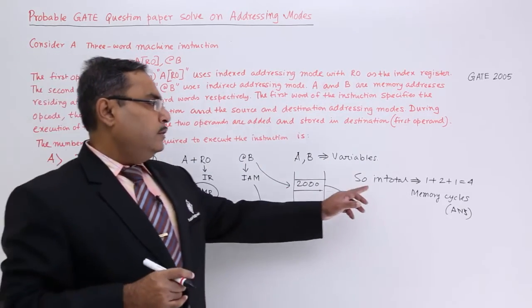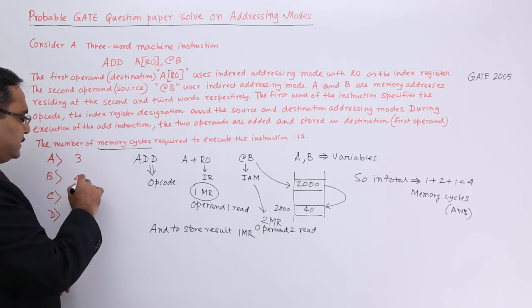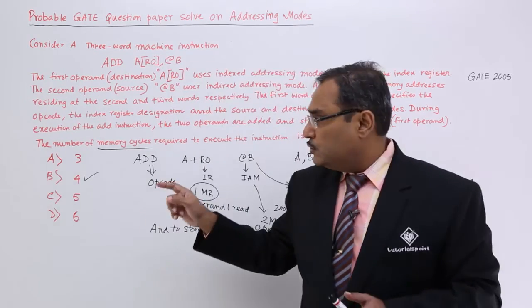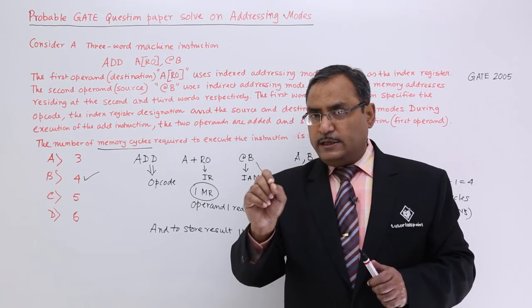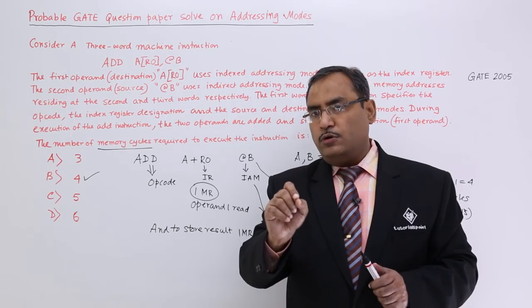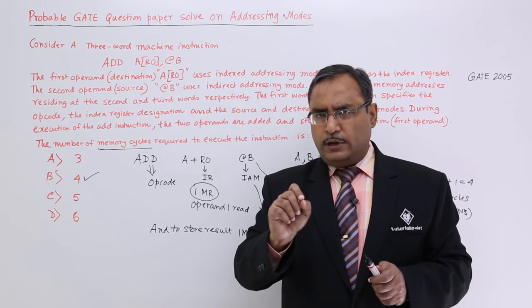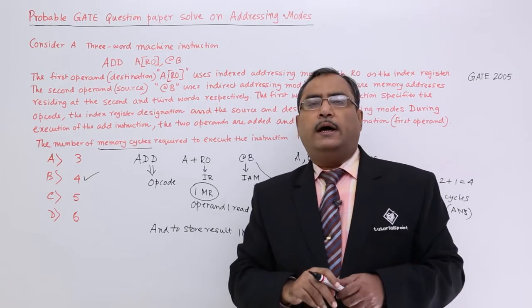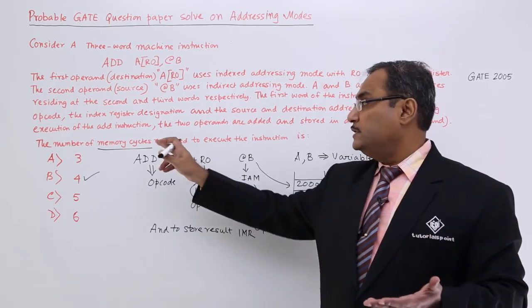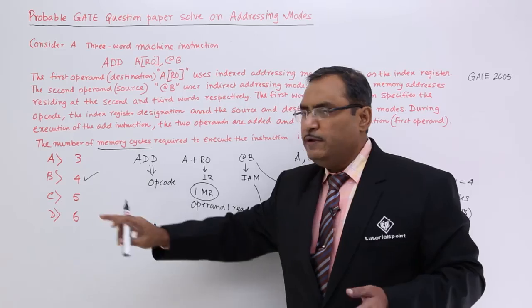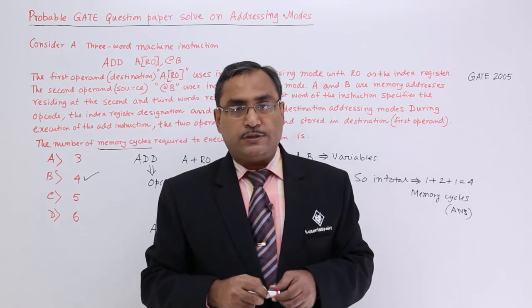In total: 1 (operand 1 read) plus 2 (operand 2 reads) plus 1 (store) equals 4 memory cycles — that is the answer. Whenever such questions come, please concentrate on whether it is indexed addressing mode, base register addressing mode, direct, indirect, register direct, or whatever. You should calculate the number of memory cycles accordingly. The answer here is 4. Please watch the previous video where addressing modes are discussed in detail. Thanks for watching.